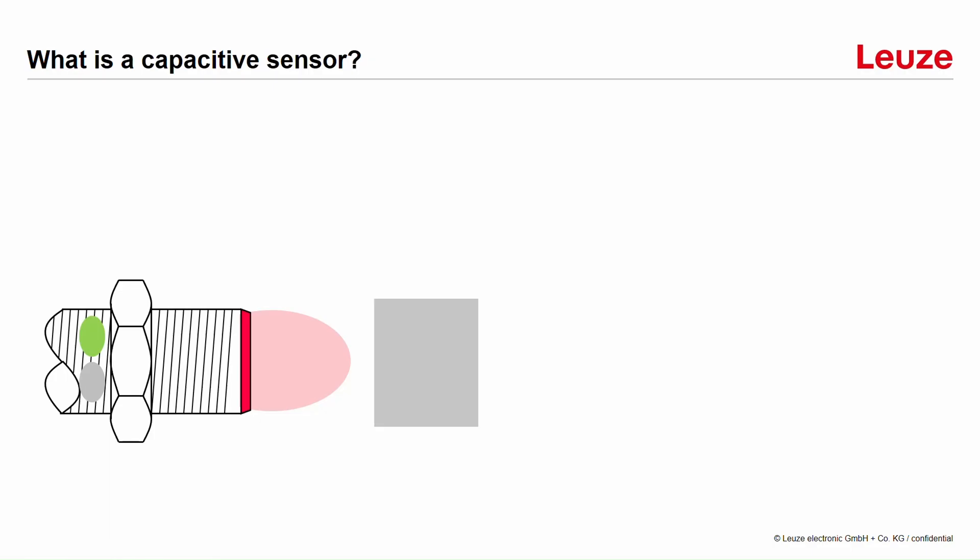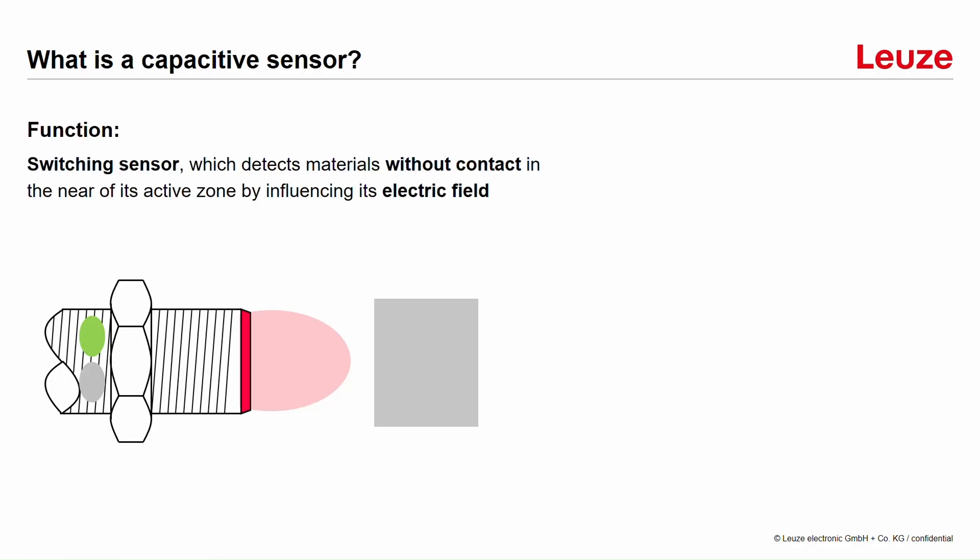What is a capacitive sensor? A capacitive sensor is mostly a switching sensor that can detect materials in the vicinity of its active zone, because these materials influence its electric field.